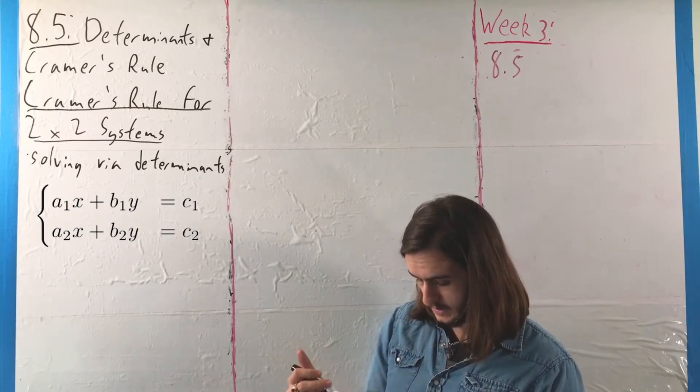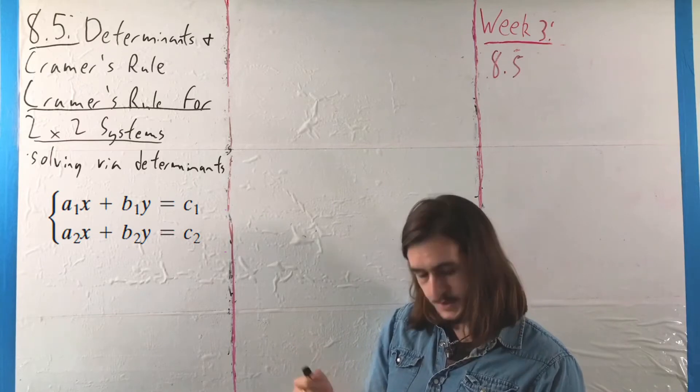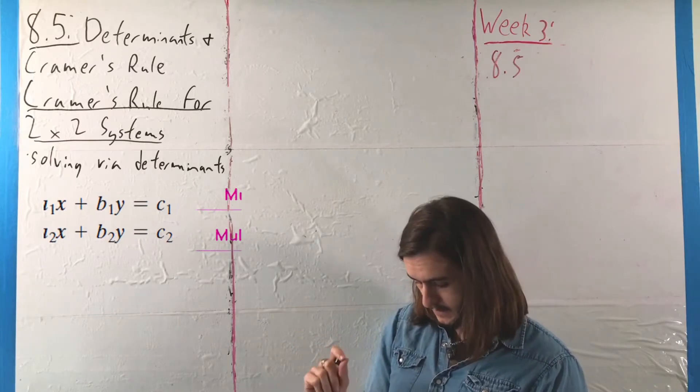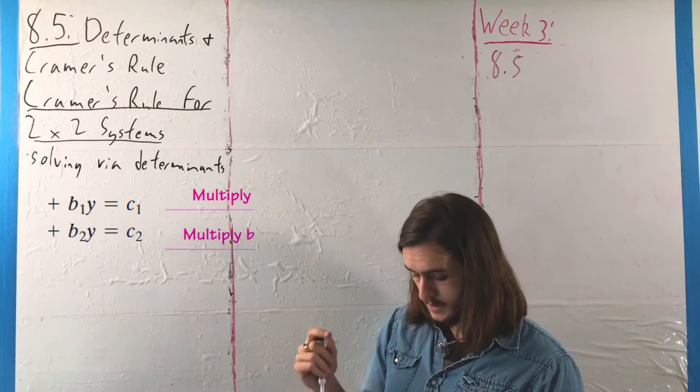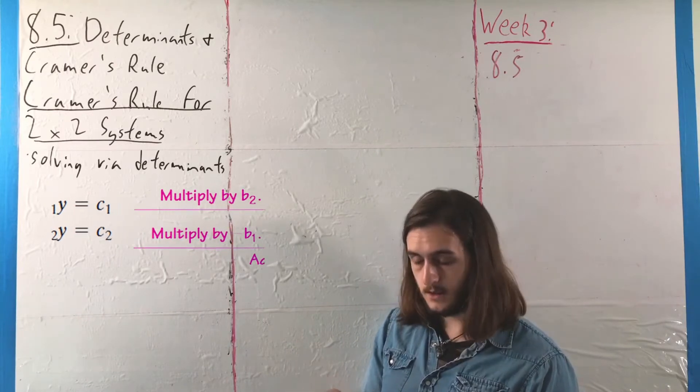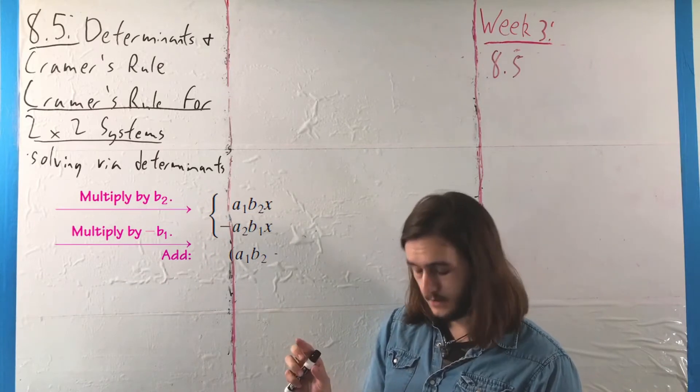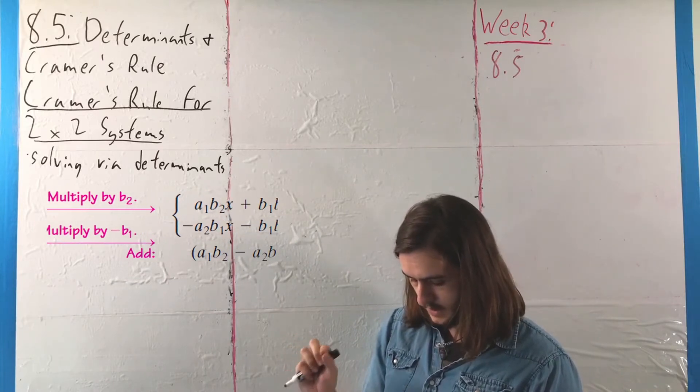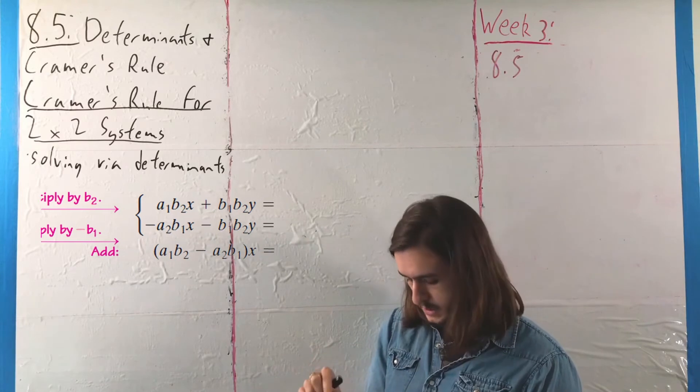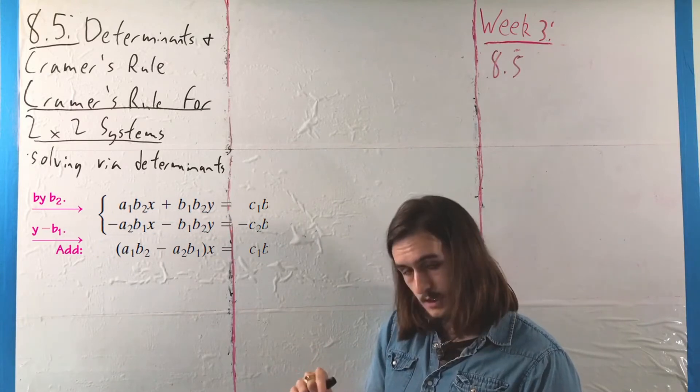So instead, we're going to take our system, and we're going to multiply the top by B2 and the bottom by B1, then add the equations together, which will cancel out the y part and leave us with A1B2 minus A2B1x equals